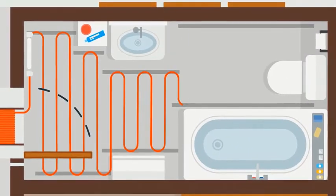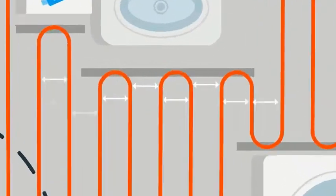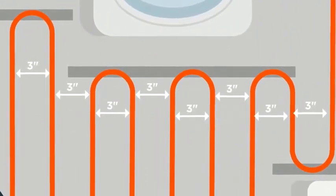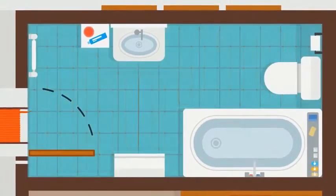To install, the cable is unrolled and laid on the floor 3 inches apart across the area to be heated. The wire is secured to the floor using the included plastic cable guides.